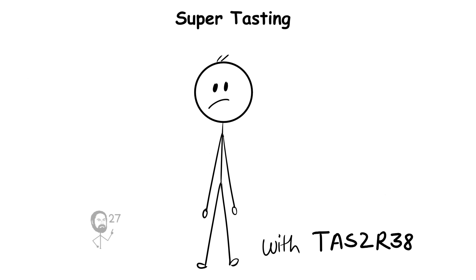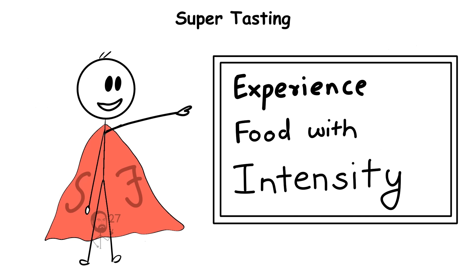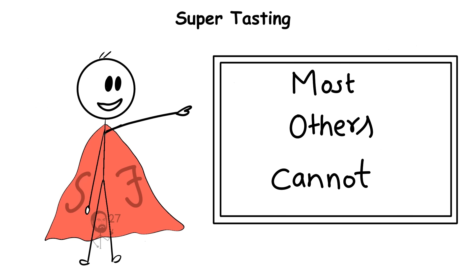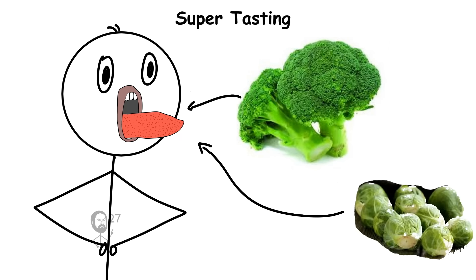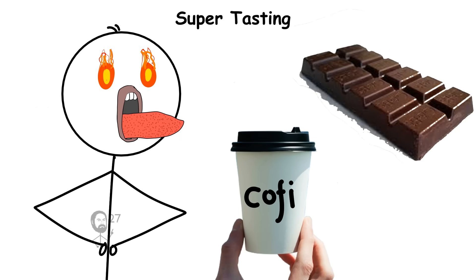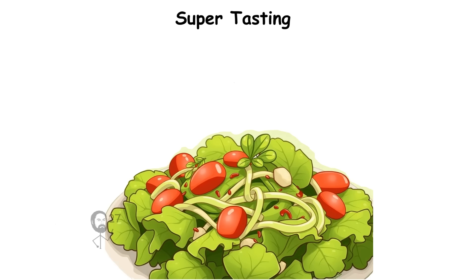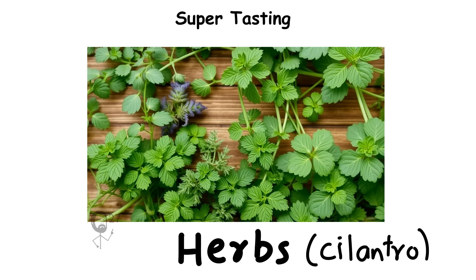People with this trait, often called supertasters, experience food with an intensity most others cannot imagine. For them, bitter vegetables such as broccoli or Brussels sprouts may taste harsh, while coffee or dark chocolate can feel overpowering. Even everyday flavors like salad greens or herbs carry a sharp, lingering edge.